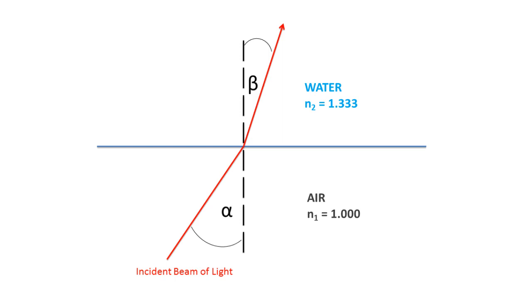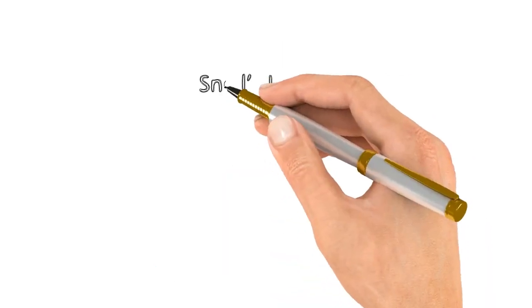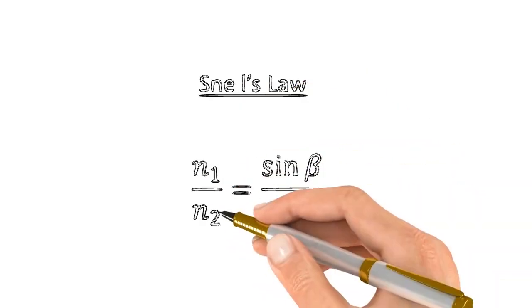The denser the material, the slower the phase velocity, therefore the higher the refractive index and the smaller the angle of refraction to the normal. This is defined by Snell's law, which I will expand on in another video.